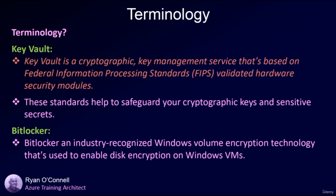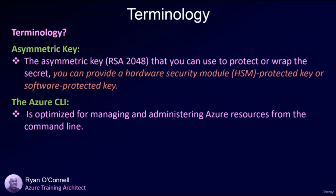Key Vault is a cryptographic key management service based on FIPS-validated hardware security modules that help safeguard cryptographic keys and sensitive secrets. BitLocker is an industry-recognized Windows volume encryption technology used to enable disk encryption on Windows VMs. An asymmetric key — RSA 2048 — can be used to protect or wrap a secret, using either a hardware security module-protected key or a software-protected key. The Azure CLI is optimized for managing and administering Azure resources from the command line.